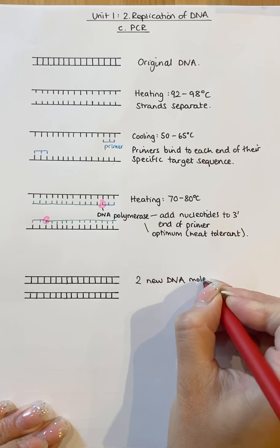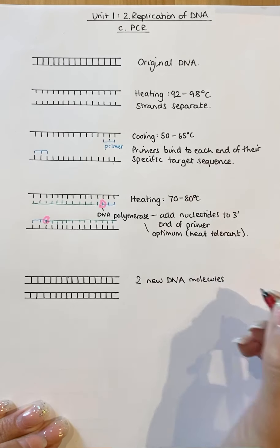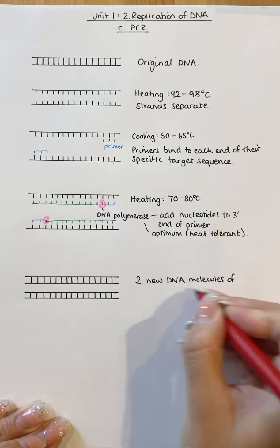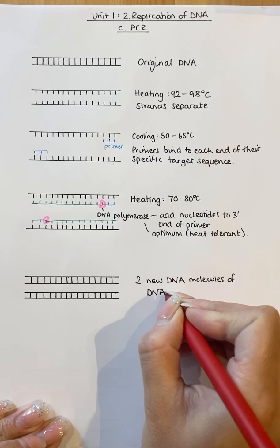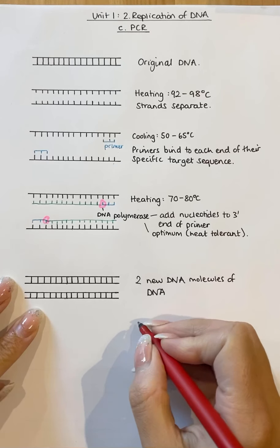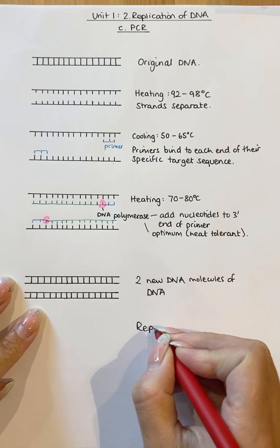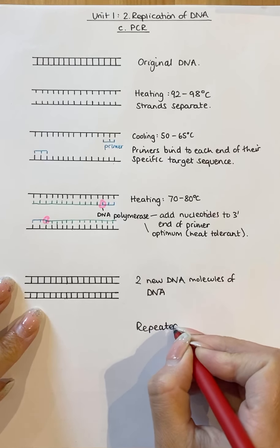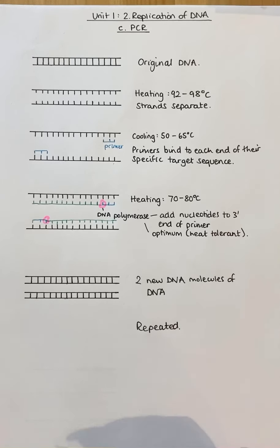So the purpose of this is to amplify it many, many times. So once we have produced these two new molecules of DNA, this process is repeated. And once that process is repeated, it produces more and more and more DNA molecules.